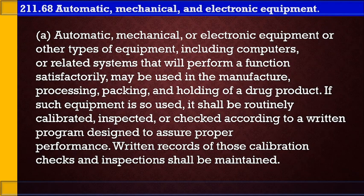Next is 211.68 — automatic, mechanical, and electronic equipment. Automatic, mechanical, or electronic equipment or other types of equipment including computers or related systems that will perform a function satisfactorily may be used in the manufacture, processing, packing, and holding of a drug product. If such equipment is used, it shall be routinely calibrated, inspected, or checked according to a written program designed to assure proper performance. Written records of those calibration checks and inspections shall be maintained.